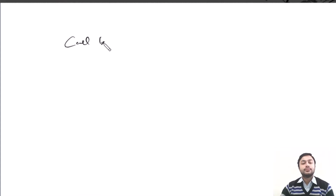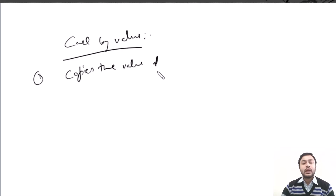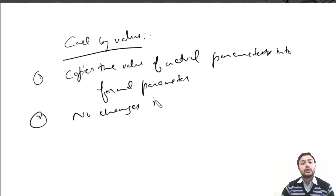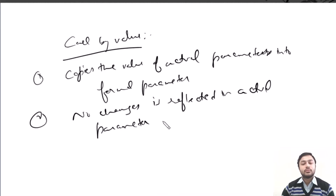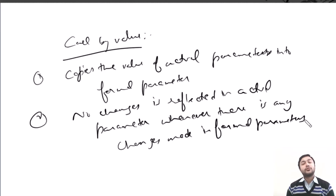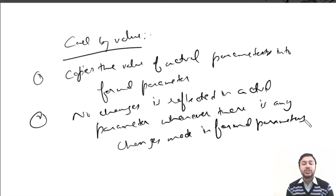In call by value, there are two important points. The first point is that it copies the value of actual parameters into formal parameters. The second point is that no changes are reflected in the actual parameters whenever any changes are made in the formal parameters. That means if you modify the values of the formal parameters, there are no changes in the actual parameters.